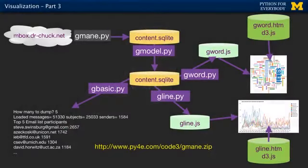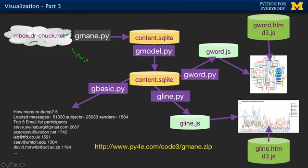This is basically the data flow that's going to happen. We go to drchuck.net, which has all the data and an API. We iterate through a sequence of numbers — message one, message two, message three — and we know how much we've already retrieved.